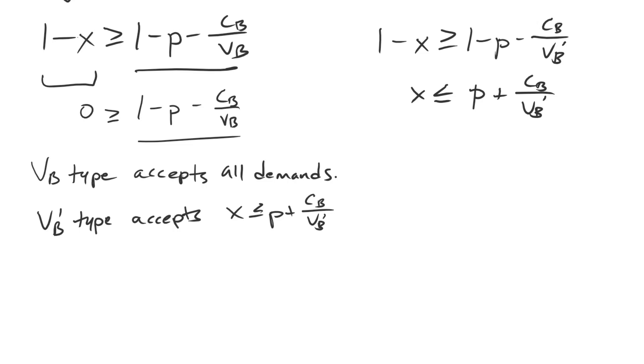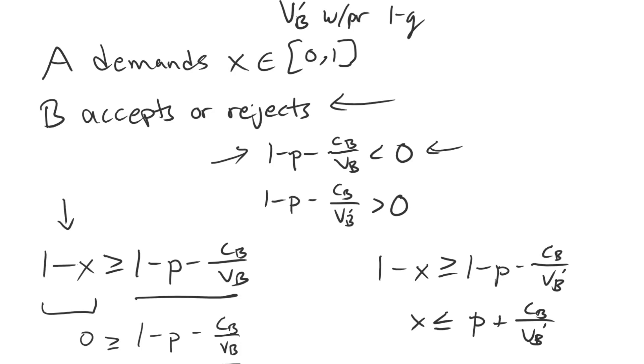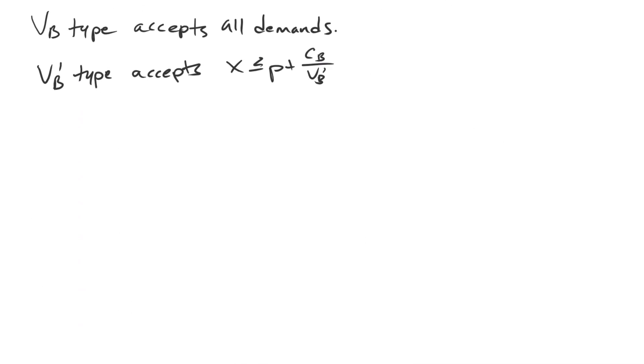Now, the reason that this game is going to ultimately be simpler in comparison to the interior solution is because there are only two different types of demands that we need to sort out for figuring out whether A is going to make one demand or another demand. So to recap where we've been on this game so far, we have solved for B's accept or reject decision. All we need to do is figure out which demand of A is maximizing A's payoff. So what value of X should A choose to maximize its utility under the circumstance? Well, if we think about the options that A has, we draw this out as different X possibilities, there's a cut point of P plus CB over VB' and any demand less than that is going to be accepted by both types. Both accept. Why is that? Well, the VB type is accepting all demands and the VB' type is accepting as long as it's to the left of it, inclusive of that cut point of P plus CB over VB'.